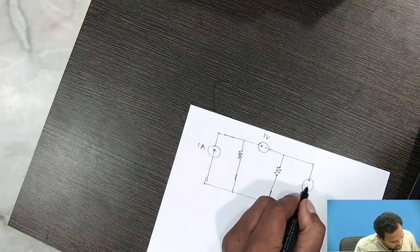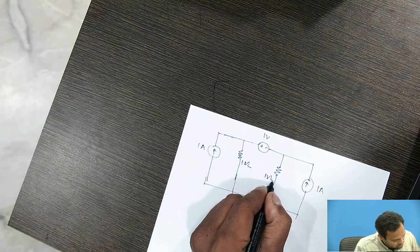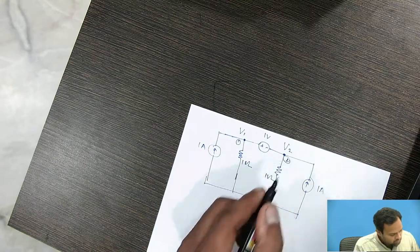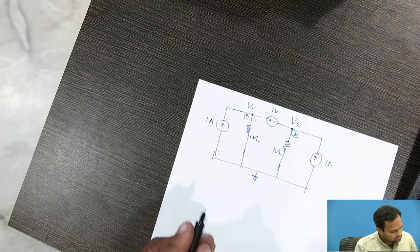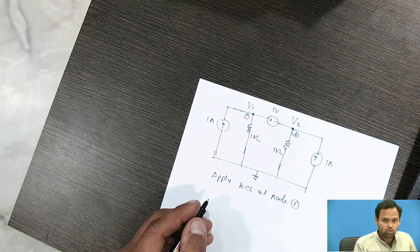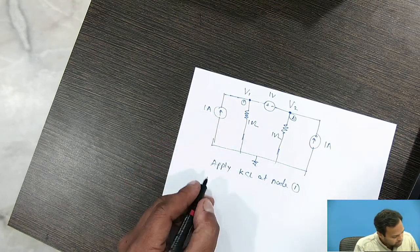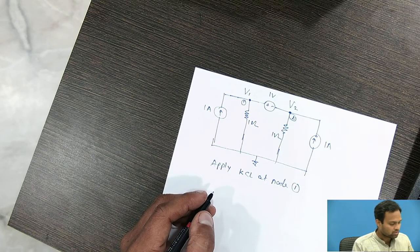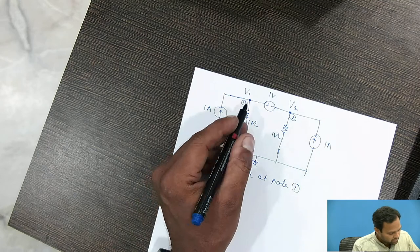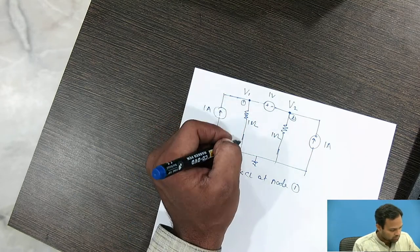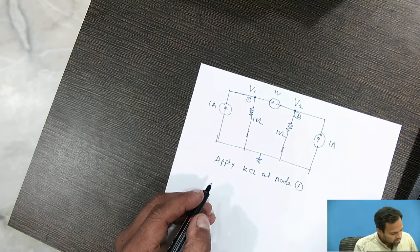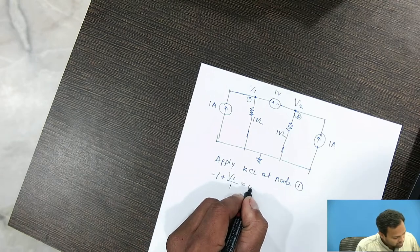I will redraw the circuit: there is a 1 ampere current source, resistance values, node voltages V1 and V2 at node 1 and node 2, and this is the ground node. Applying KCL at node 1 — incoming current is assigned negative and outgoing current is assigned positive. The 1 ampere current going into node 1 is negative, and the current through the branch is outgoing. The equation is: −1 + V1/1 = 0.